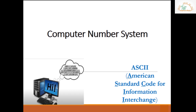If it is lowercase B, it will be 98, and so on. So when we type a letter, symbol, or anything from the keyboard, the computer translates them into numbers, as the computer can understand only numbers. Since the computer is an electronic device, it represents all data — including audio, graphics, video, text, and numbers — into binary form.